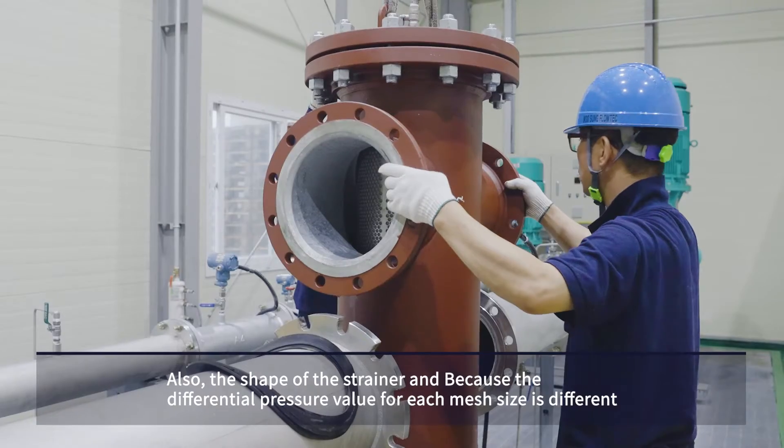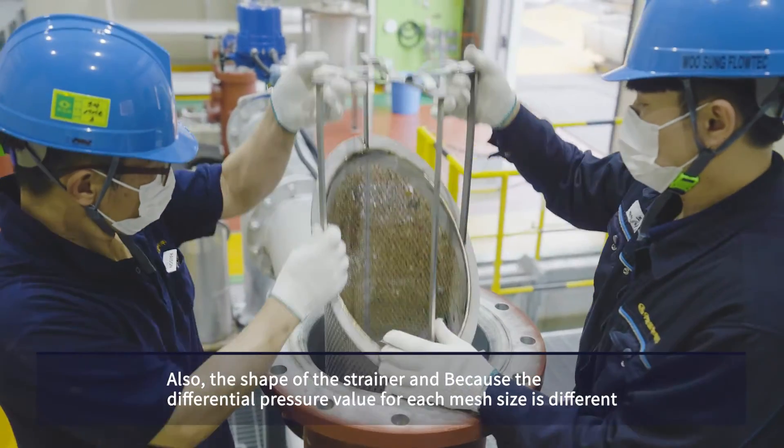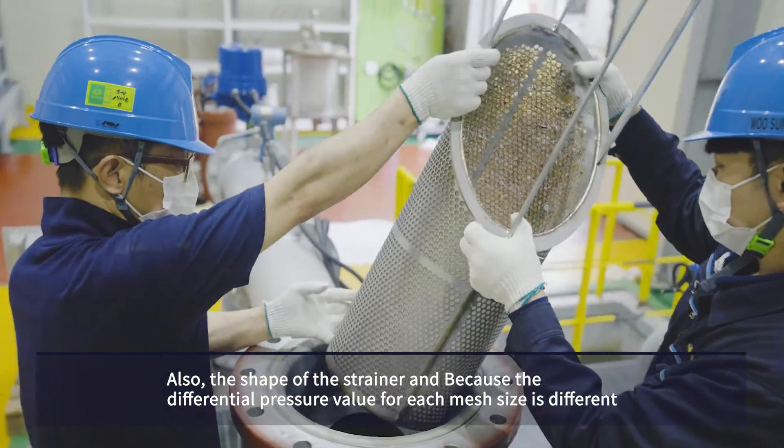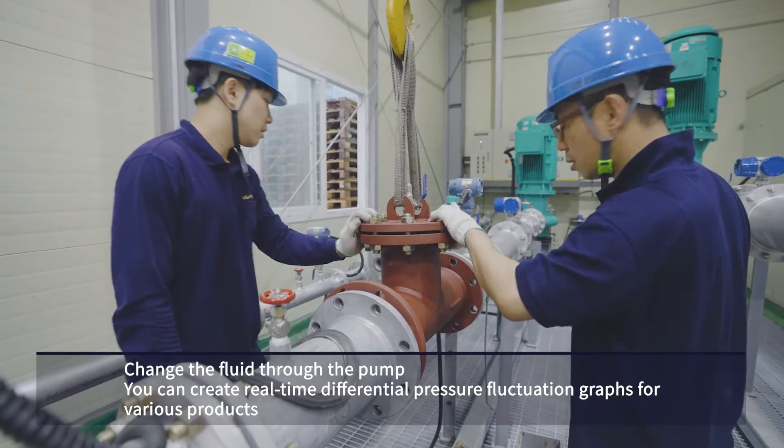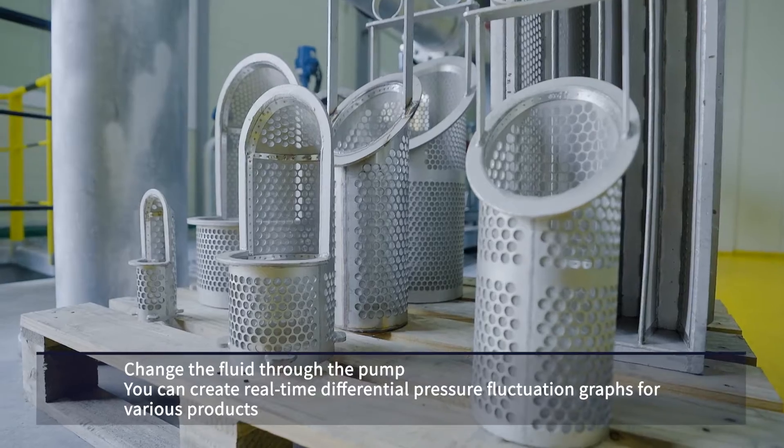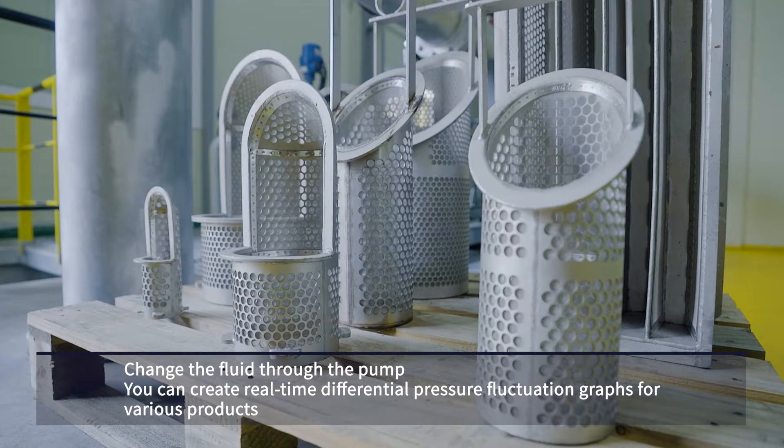Also, the shape of the strainer and the differential pressure value for each mesh size is different. By changing the fluid through the pump, you can create real-time differential pressure fluctuation graphs for various products.